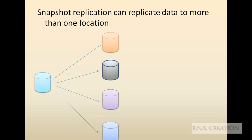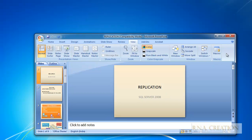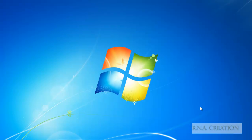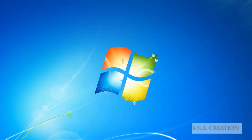Snapshot replication can be replicated to more than one location. We are going to use it for only one location, but it can be done to multiple. That is the basic fundamental of snapshot replication — now let's look at what we can do with it.